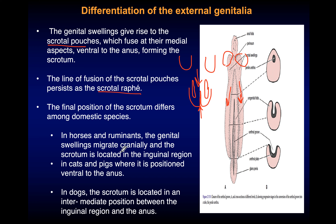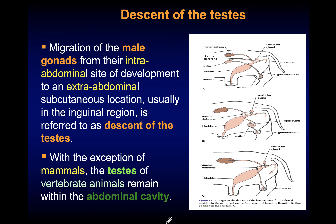The location of the scrotum differs among domestic species. In the horse and ruminants, the genital swelling migrates cranially so the scrotum is located in the inguinal region. In cats and pigs, there is no migration so the scrotum remains ventral to the anus in the sub-anal region. In dogs, the scrotum is at an intermediate position between the inguinal region and the anus. This is very important to differentiate between the scrotal location of different species.